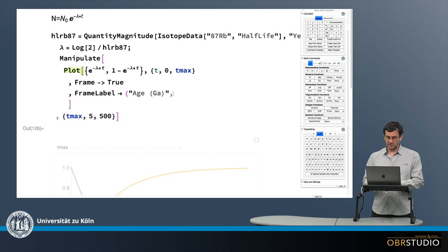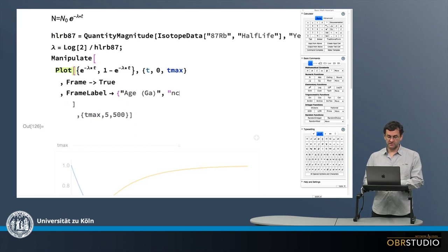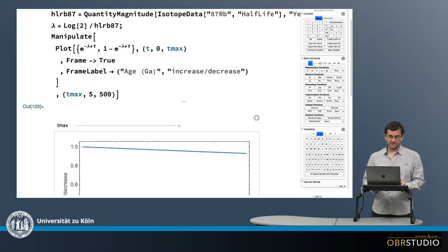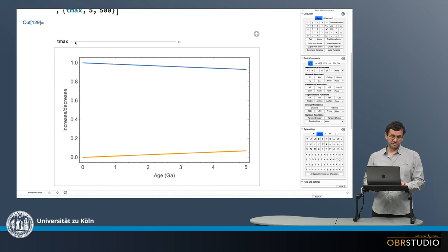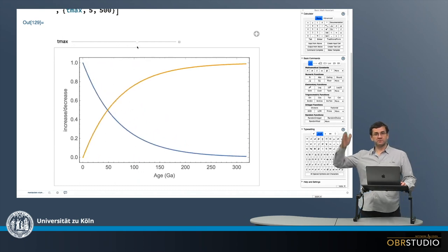And on the y-axis there would be an increase but also a decrease depending on the isotope. So this looks already a little bit better here. And I can see how with time rubidium-87 decreases and strontium-87 increases.